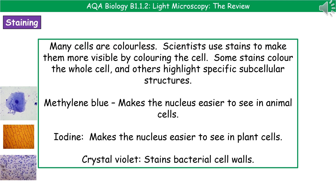When it comes to actually preparing a specimen to view under a microscope, you can't just grab it, put it under there and have a look, because many cells are actually colourless and you wouldn't really see anything. So what we do is use things called stains to make them more visible by colouring the cell. Be careful not to refer to these as dyes — the word we need to use is stain. By selecting different stains, we can show up different things: some stains will colour the whole cell, while others highlight specific subcellular structures.